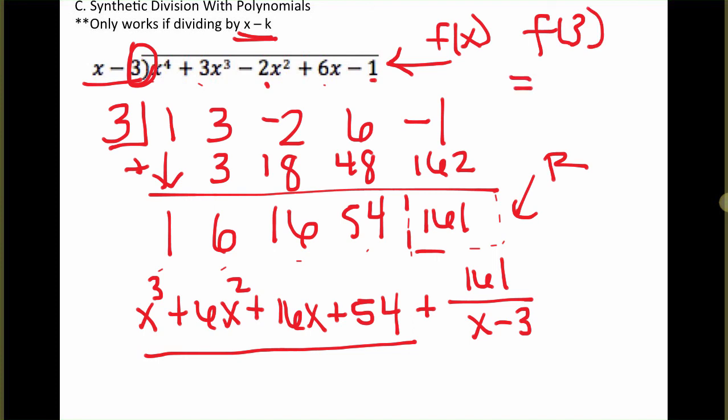So what I'm going to do is I'll plug into my calculator 3 to the 4th plus 3 times 3 cubed minus 2 times 3 squared plus 6 times 3 minus 1. And when I do that, I get 161. And that, notice, is what we had for the remainder. So any time you divide by x minus a number, or x plus a number, you can plug that number in to your equation that you're dividing in order to find the remainder.